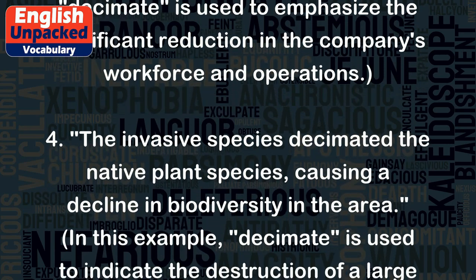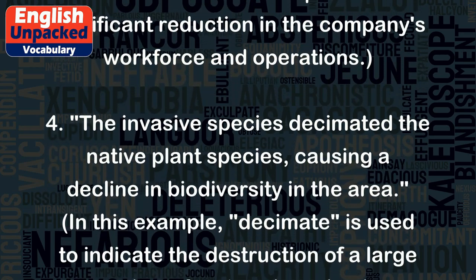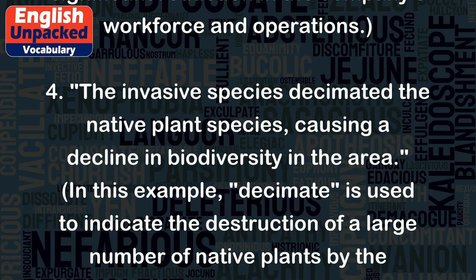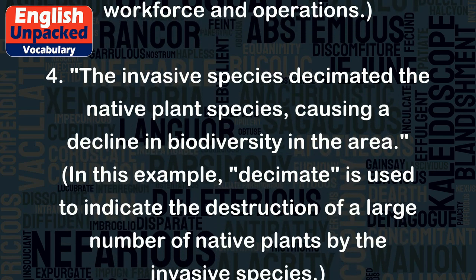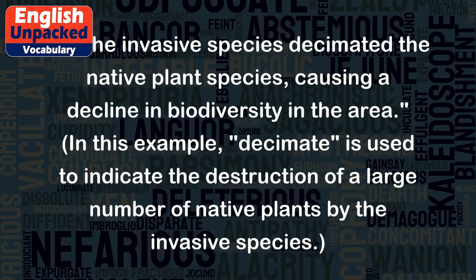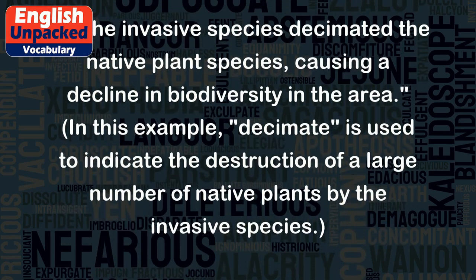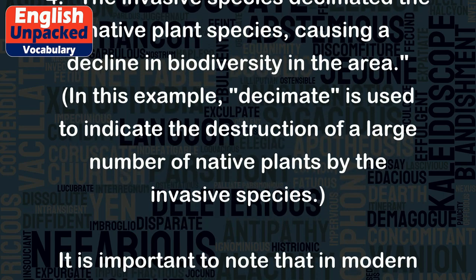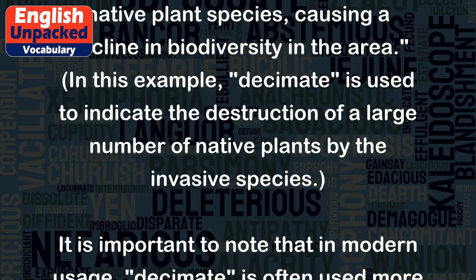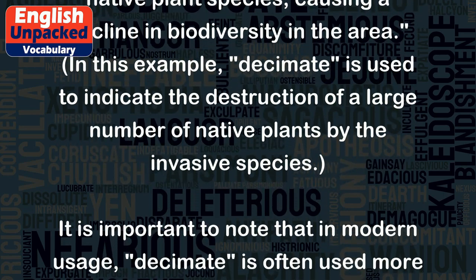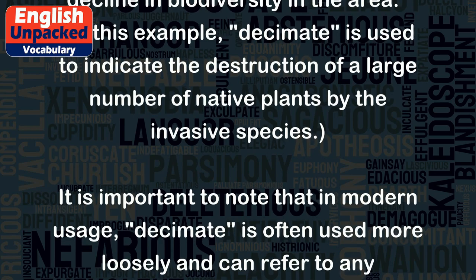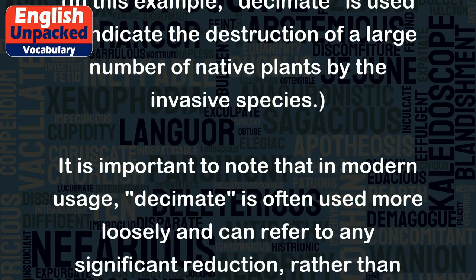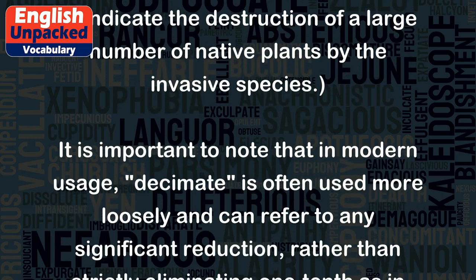Four: The invasive species decimated the native plant species, causing a decline in biodiversity in the area. In this example, decimate is used to indicate the destruction of a large number of native plants by the invasive species.